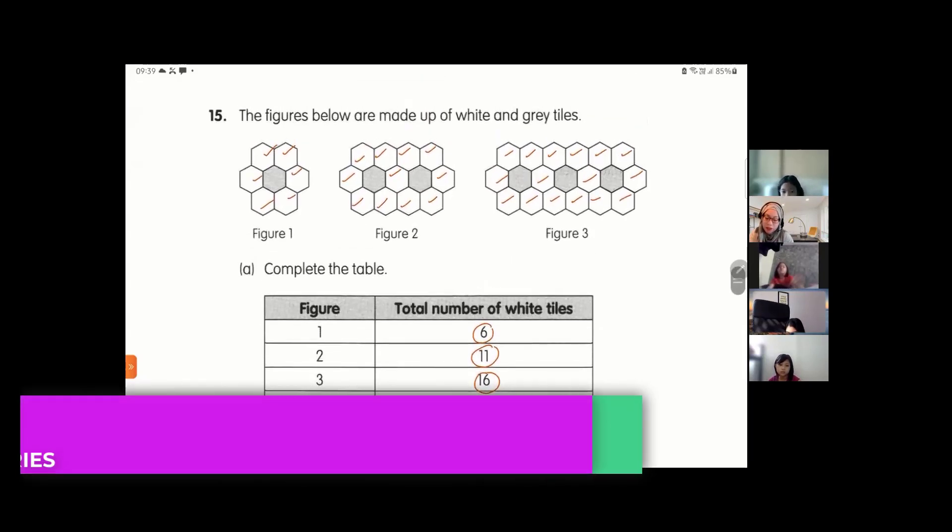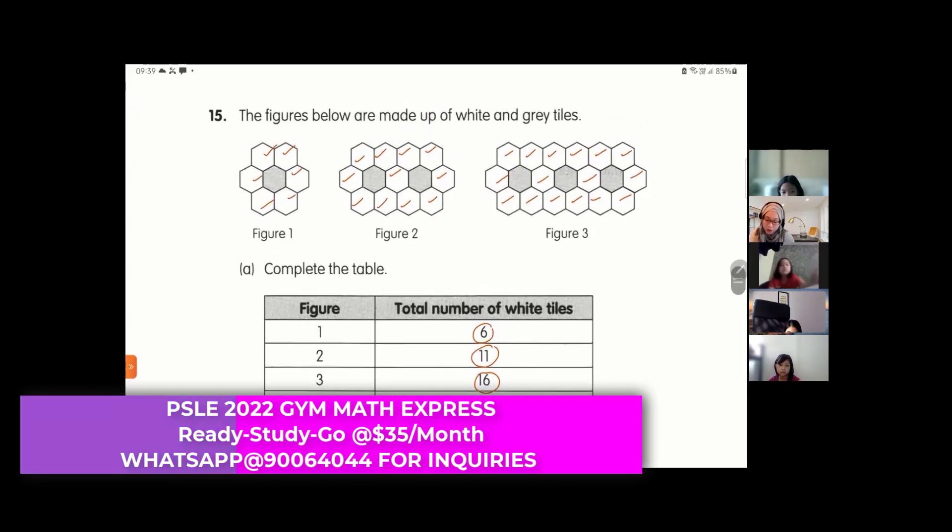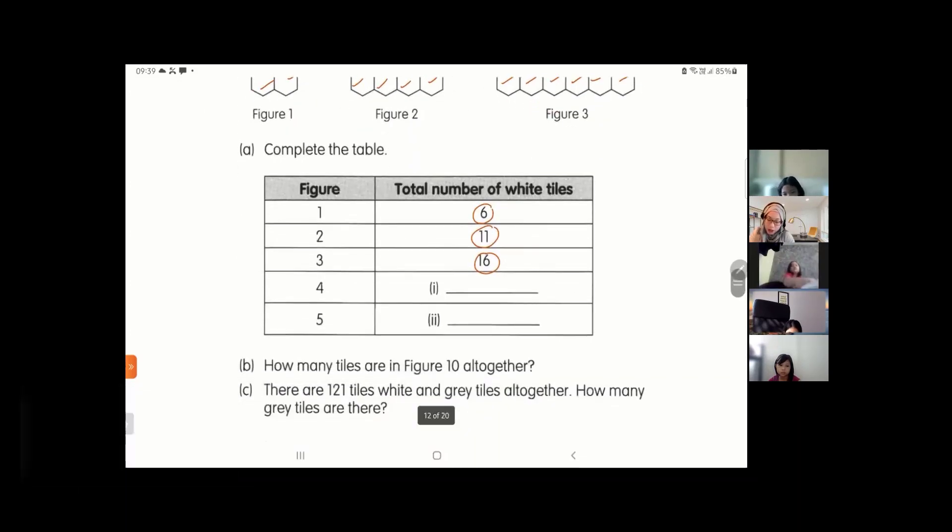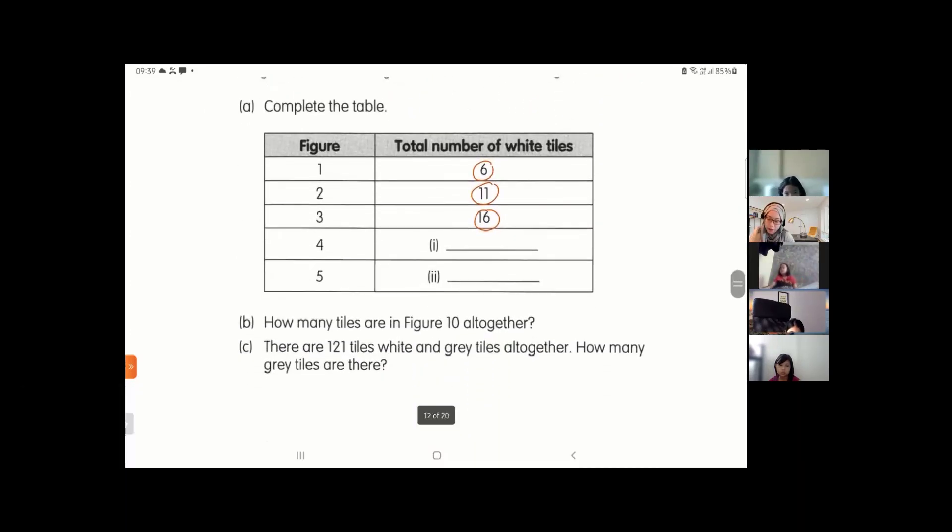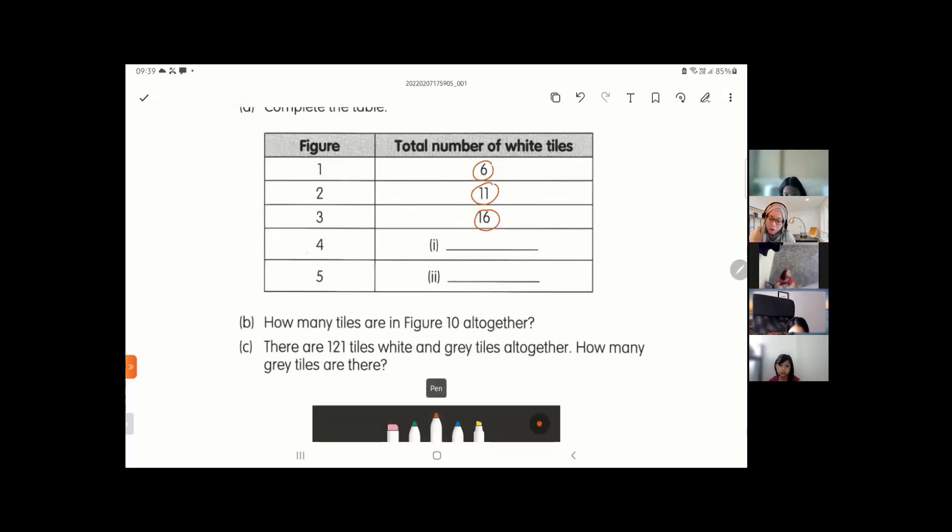So these are the white tiles, right? The gray tiles is according to how many the figure is. Figure 1 I have 1 gray, Figure 2 got 2 gray, Figure 3 got 3 gray. Now we are supposed to complete the table below for Figure 4 and Figure 5, how many gray tiles are there?